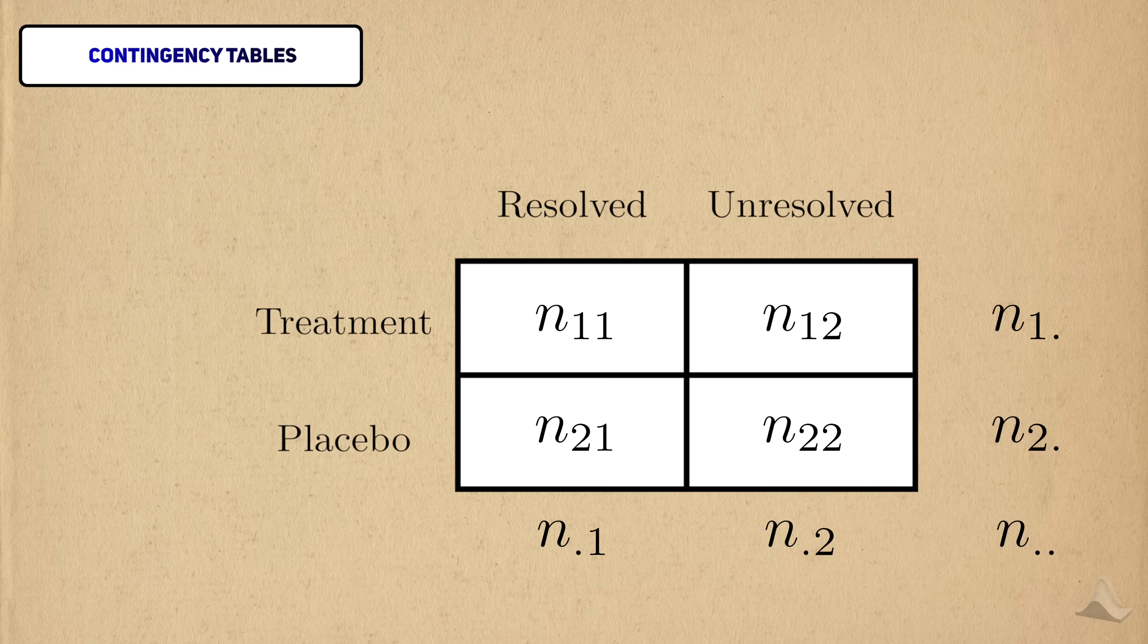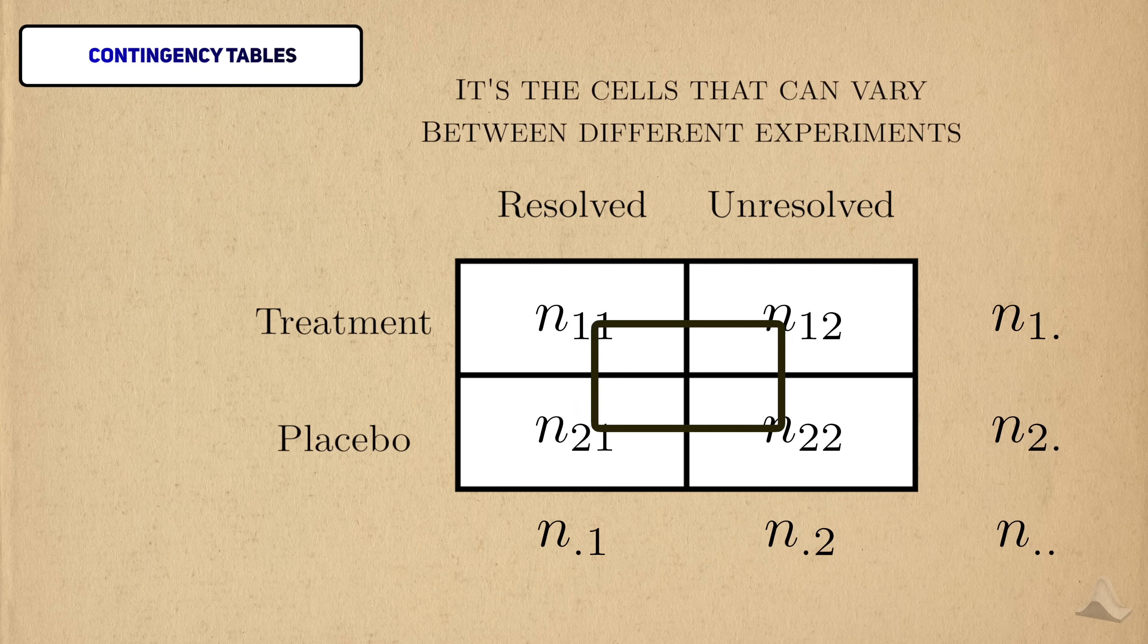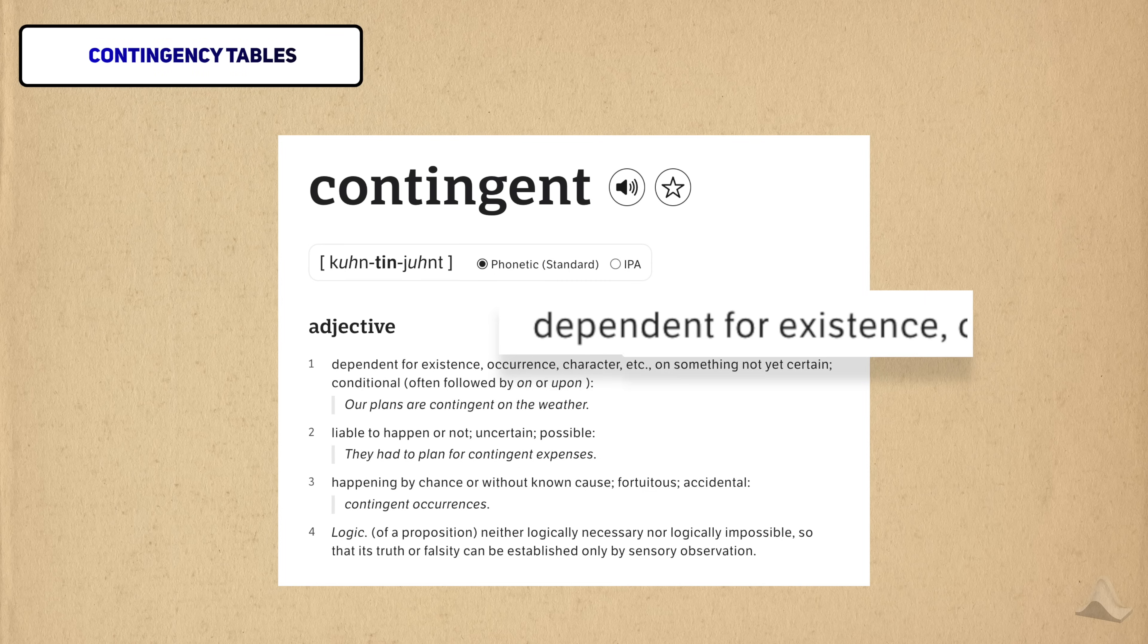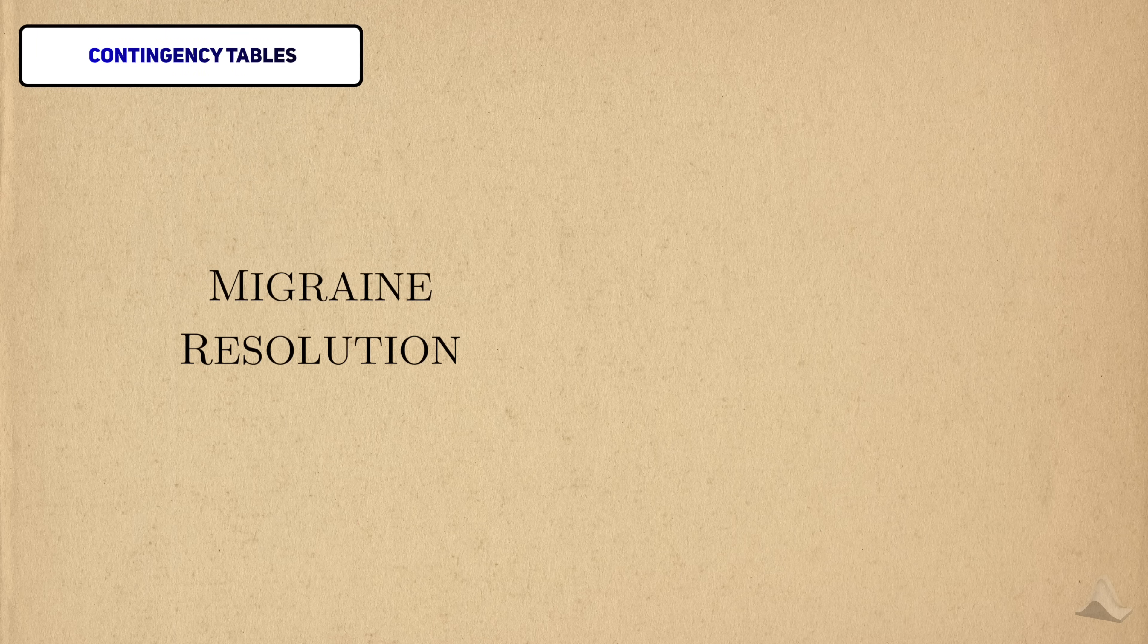Since this is a clinical trial, the sample size for both groups are usually fixed ahead of time, so the row margins are fixed. What can vary are the counts within the cells. To be contingent on something is just an advanced way of saying you're dependent on something. We're hoping that migraine resolution is contingent on, aka dependent on, the treatment group.